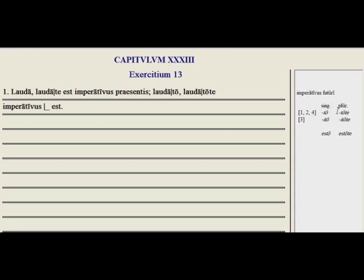But it does show up, and it means the same thing as the present imperative basically. And the endings are to and tote, and in the third conjugation it's itto and itote. For sum it's esto, be, and you guys estote, be.